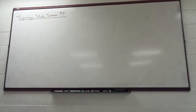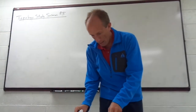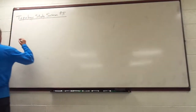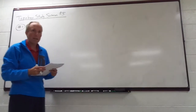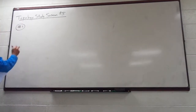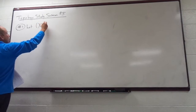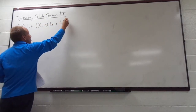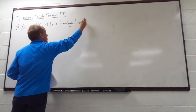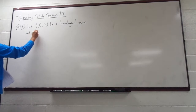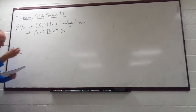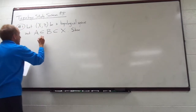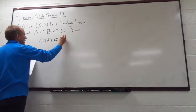I'm going to give you guys some practice problems here to help us get started. Let's start a little bit easy — just something simple. I'm trying to write problems that would be reasonable, not anything too crazy. So let X, τ be a topological space, and A is a subset of B is a subset of X. Suppose you have one subset inside of another, which is then inside of another. Show that the closure of A is a subset of the closure of B.